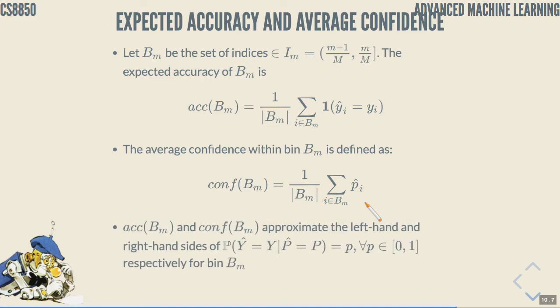The average confidence within B_m is defined - that was average accuracy. And average confidence is, we take all confidence values for all the samples that fall within the same bin and take their average normalized by the size of the bin. Then, accuracy and confidence, average accuracy and average confidence, or expected accuracy and average confidence, they approximate the left hand and right hand sides of our perfect calibration equation for bin m.